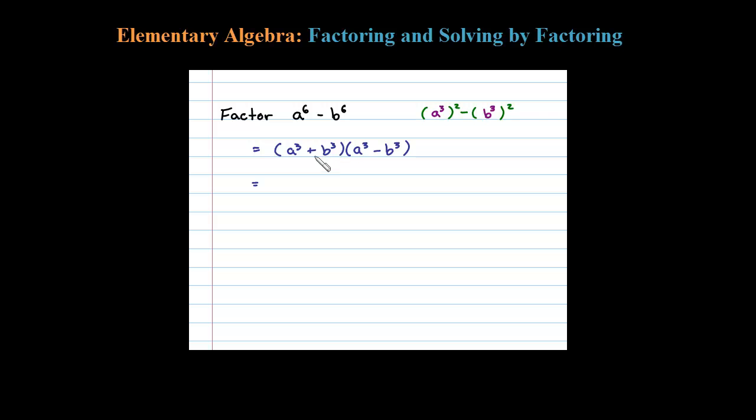Because I notice we have sum of cubes, also difference of cubes. We could factor both of those further. Sum of cubes: we have a plus b times a squared minus ab plus b squared. That's basically the formula for sum of cubes.